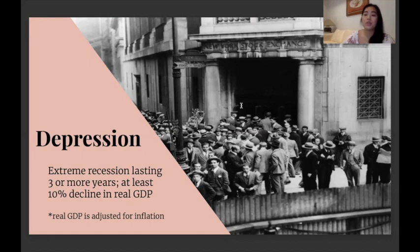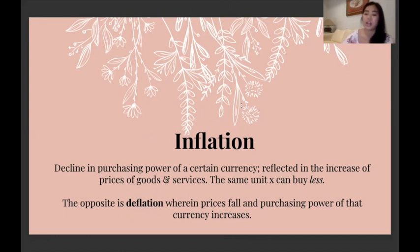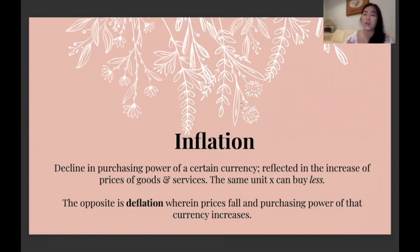Real GDP as opposed to nominal GDP is adjusted for inflation. Inflation is a decline in the purchasing power of a certain currency, reflected in the increase of prices of goods and services. That means the same unit of a peso can now buy less things — if a peso this year can buy a piece of candy, maybe next year it can only buy the equivalent of 25 cents' worth. That's why older people tell us their tuition used to be 100 pesos, or food used to be a lot cheaper than it is now.